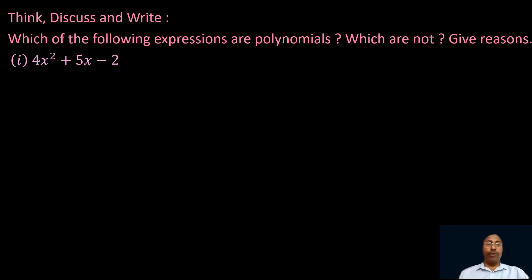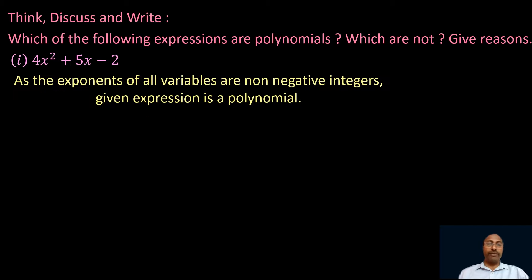The first expression is 4x square plus 5x minus 2. A polynomial is an algebraic expression that contains only non-negative integers as powers of the variables. In 4x square plus 5x minus 2, the power of x in the first term is 2, in the second term is 1, and in the third term is 0 (since 2 = 2·x⁰). So all exponents are non-negative integers — the given expression is a polynomial.